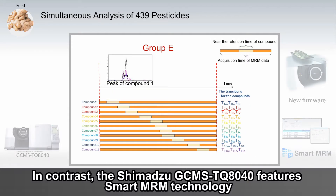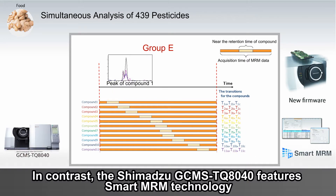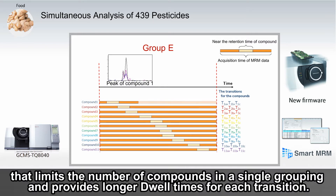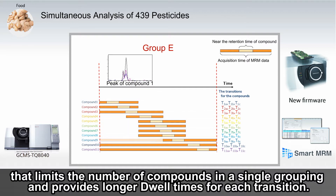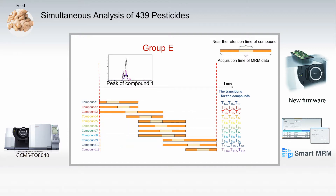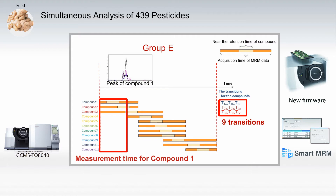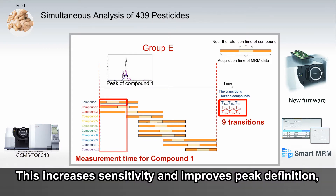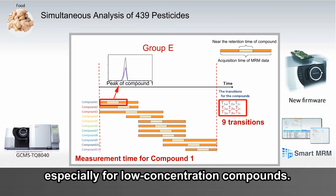In contrast, the Shimazu GCMS TQ8040 features SMART MRM technology that limits the number of compounds in a single grouping and provides longer dwell times for each transition. This increases sensitivity and improves peak definition, especially for low concentration compounds.